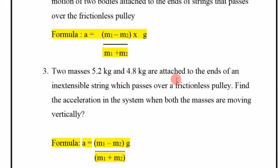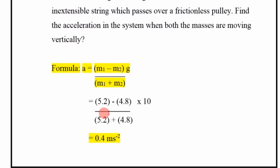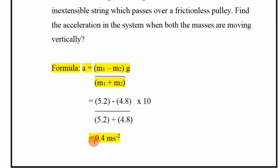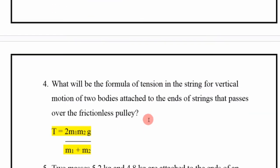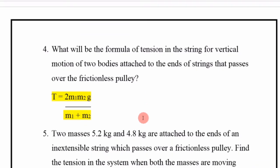Numerical: Two masses 5.2 kg and 4.8 kg are attached to the end of an inextensible string which passes over a frictionless pulley. Find the acceleration in the system when both masses are moving vertically. Using a = (m1 − m2)/(m1 + m2) × g, we put the values and get a = 0.4 m/s².